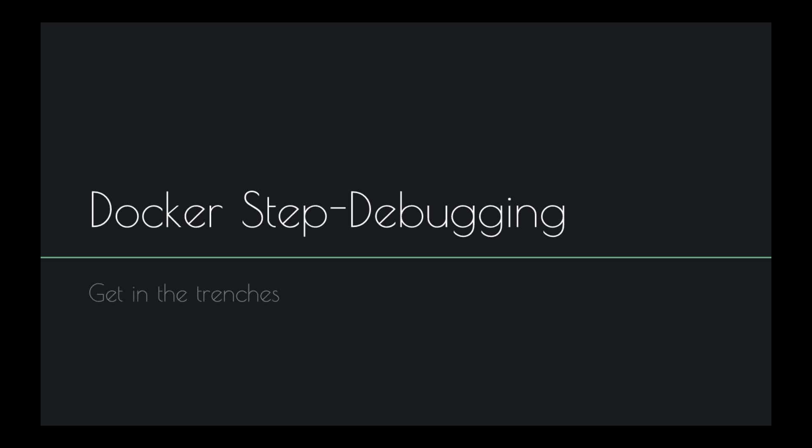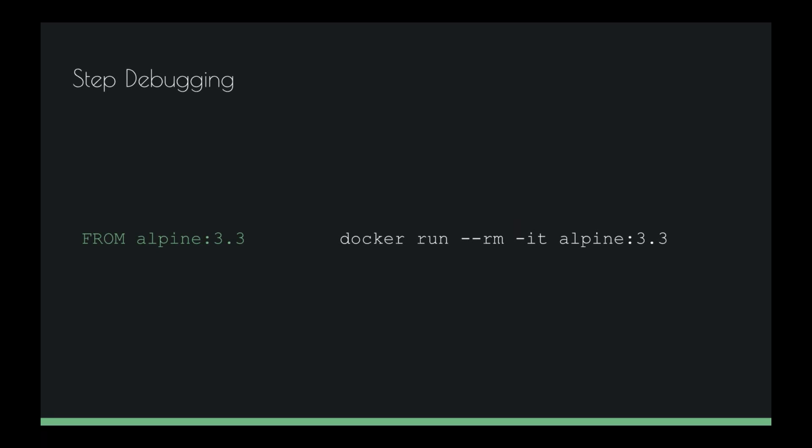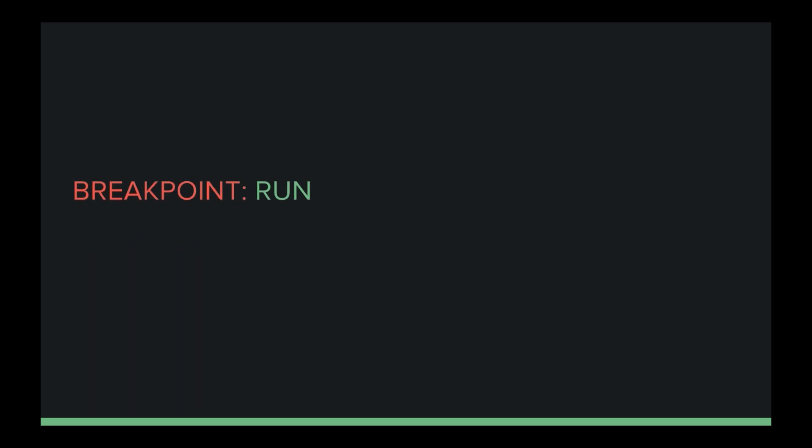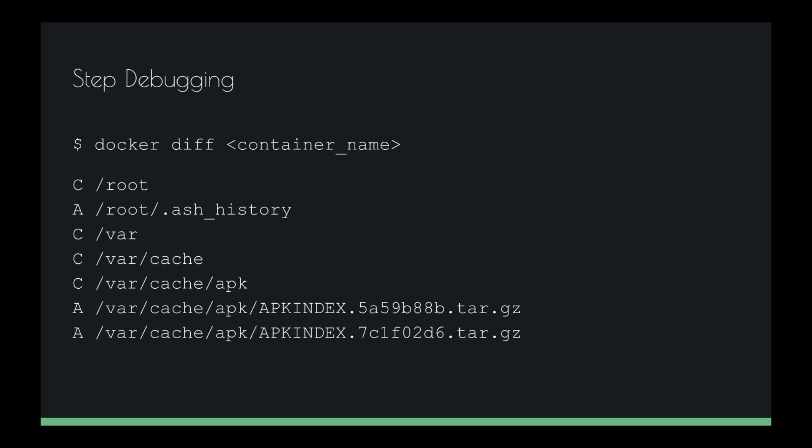We're going to step through our Dockerfile and look at a different way of debugging. We start from our base image, Alpine 3.3, and we can replicate that on the command line by doing docker run with --rm (which means delete me when I'm finished) and -it (which means we want an interactive TTY). This gets us into a shell prompt that allows us to execute arbitrary commands. Our commands are going to be everything inside our Dockerfile. So next, we have an APK update — we just take away the 'run' keyword and run that command directly in the container. Any time you have a RUN in your Dockerfile, consider it a breakpoint: that's where we've made a change to the system.